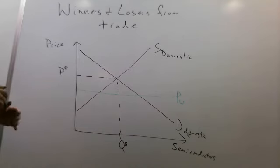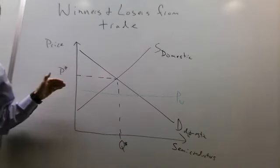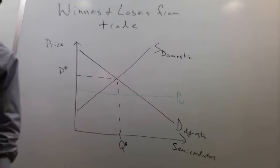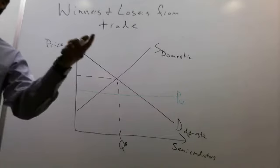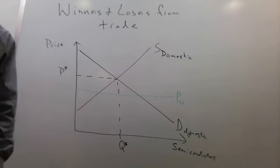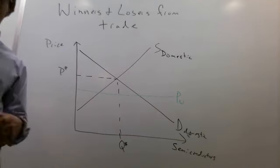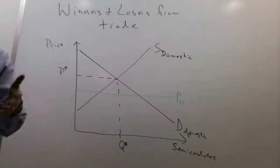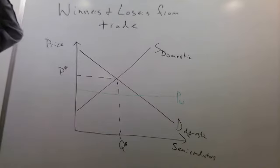Think about sugar right now — we pay something like two and a half times what we should. We don't let anyone import sugar. We have a Cuban embargo, price supports, and other things to encourage local production that's really expensive. It'd be much cheaper to import sugar. So if we remove trade restrictions, we'd face a lower world price. Same was true with semiconductors in the 1990s. A lower price is good for consumers.